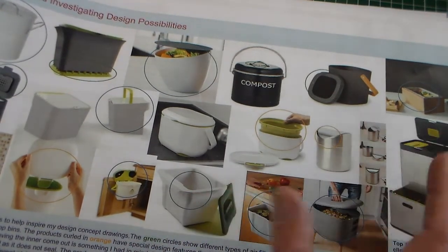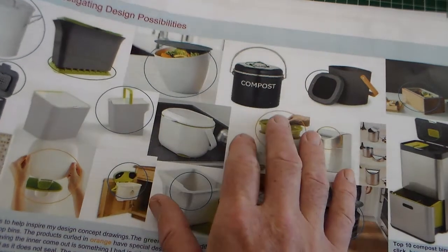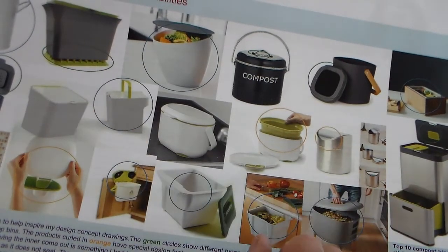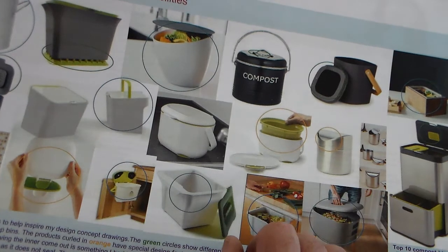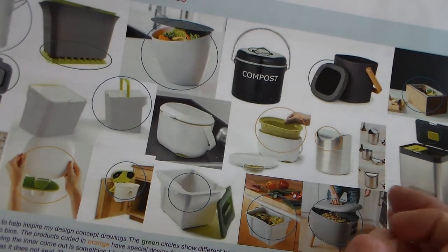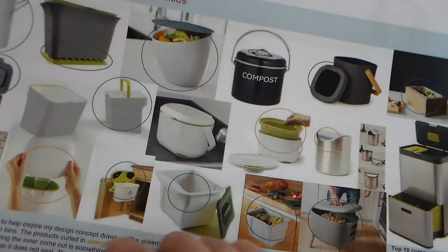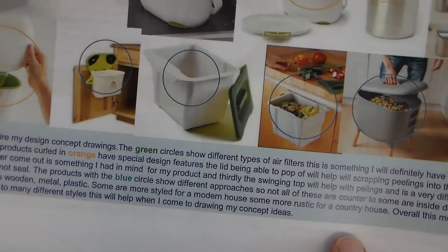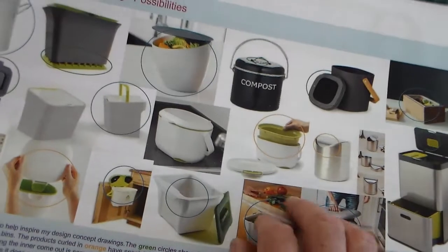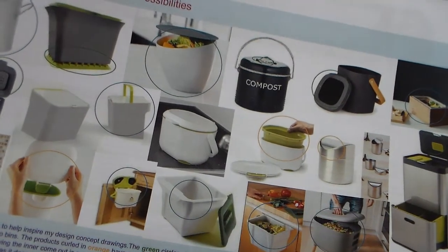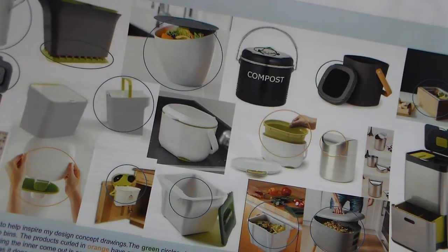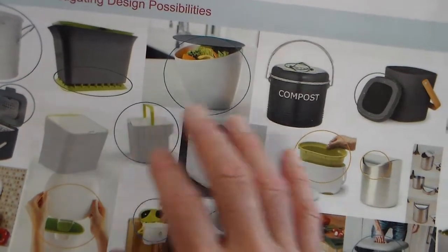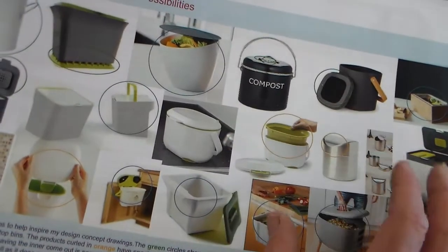What they've done is not really existing products. It's more of a mood board, just showing a whole load of images. This is the student that's creating a vegetable waste bin. So they've looked at different ones. They've said: I've collected a range of photos to help me inspire my design concept drawings. The green circles show different types of air filters, orange circles show design features, and blue circles show different approaches. So not really analysing what things are made of, but just looking at the design possibilities that are out there.